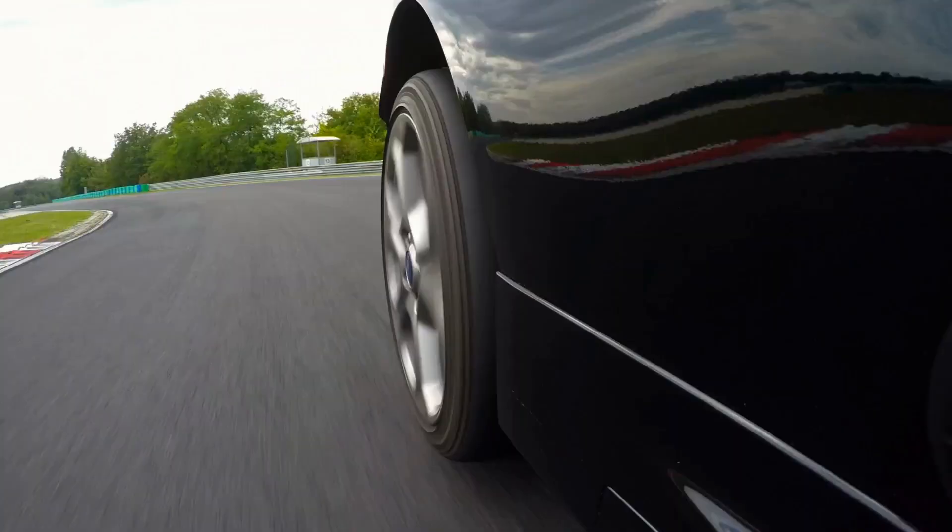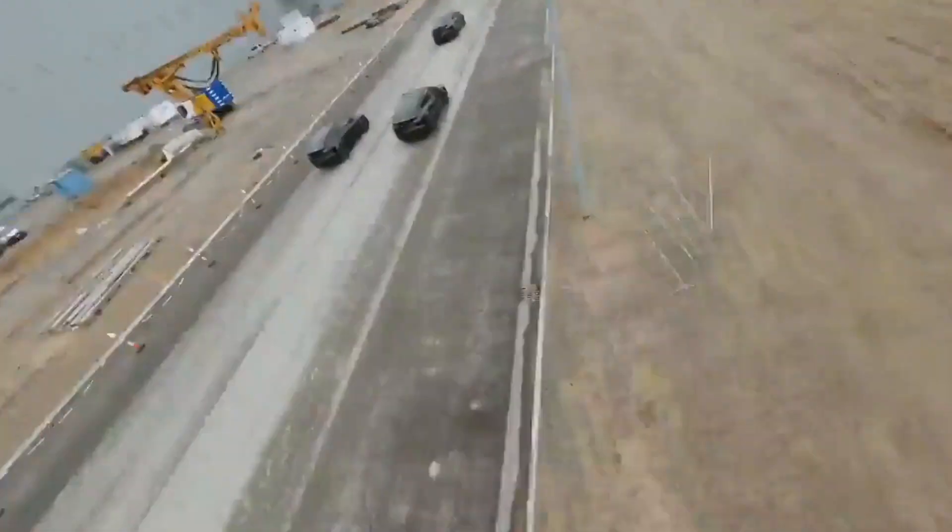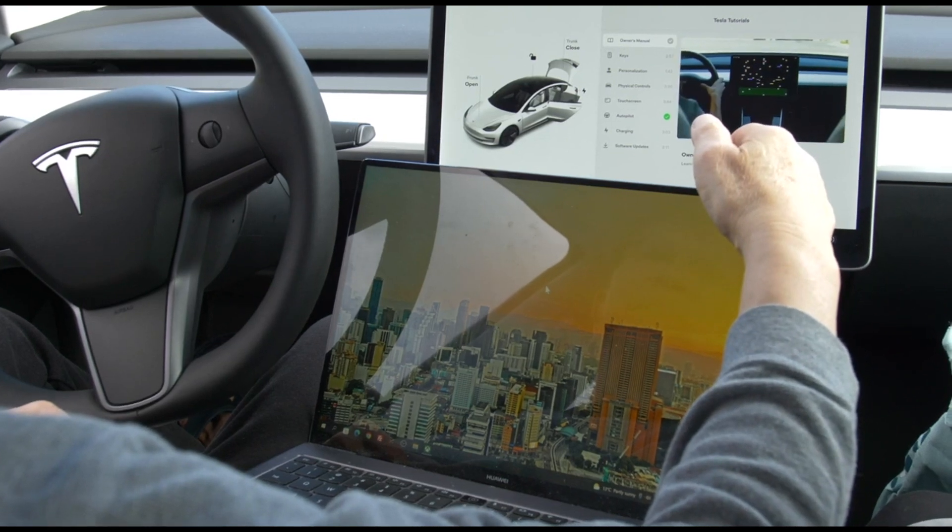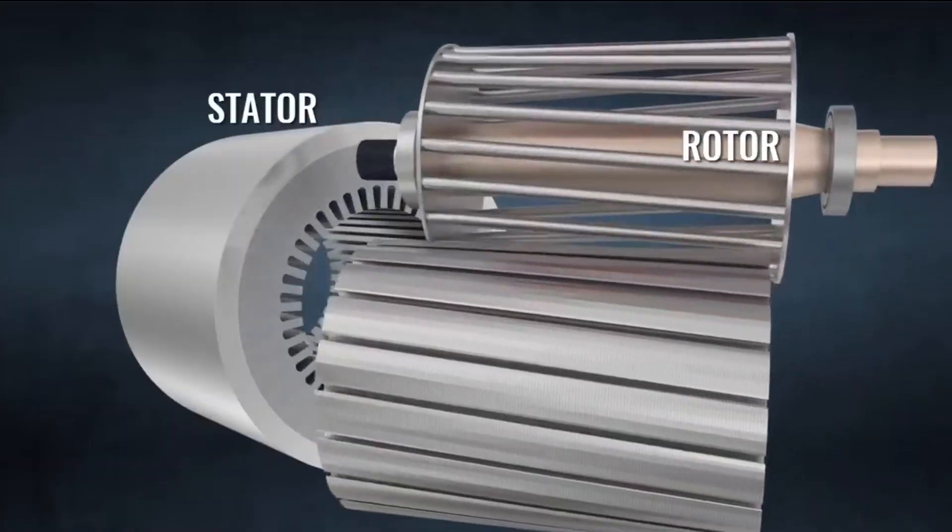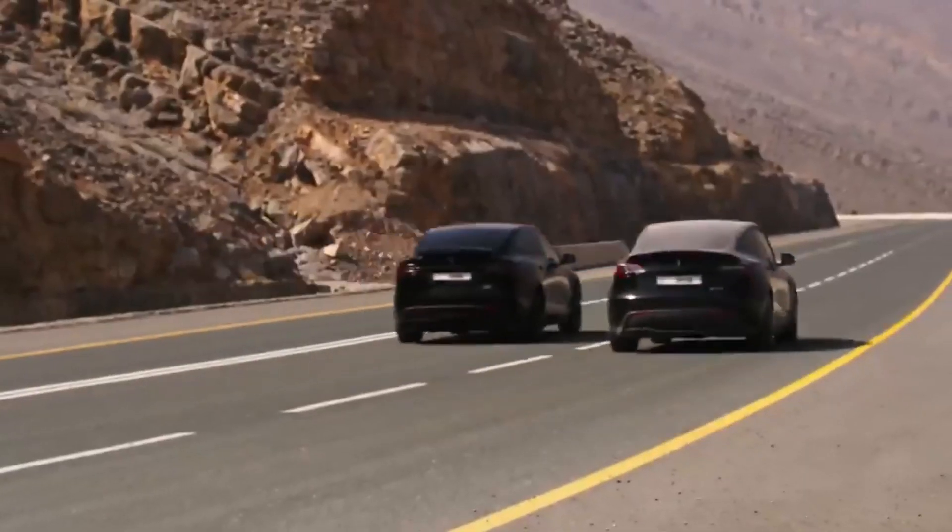So whether you're planning a road trip or just running errands around the town, the hairpin engine may just be the key to overcoming range anxiety. In today's video, we're diving deep into Tesla's latest innovation to see how it works and what sets it apart from other electric motors.